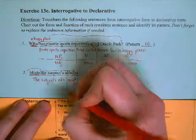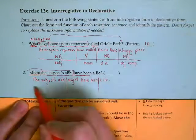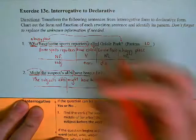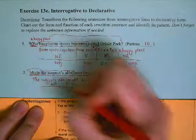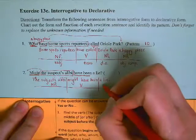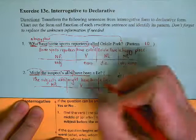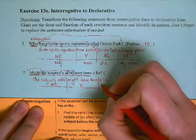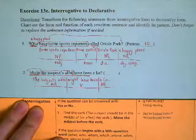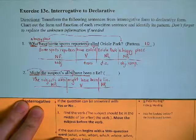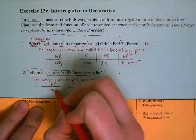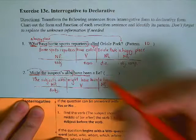Might have been is our verb. Suspect's alibi, noun phrase one. A lie, same as the alibi, so that's also noun phrase one. When we think about what kind of verb we have, we know the alibi is our subject. The main verb is always kind of what you focus on, and in this case our main verb is 'be.'